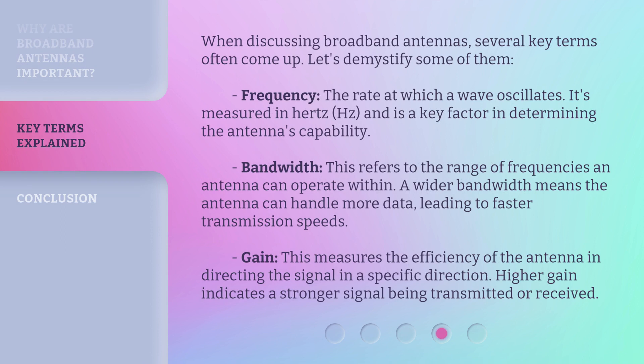When discussing broadband antennas, several key terms often come up. Let's demystify some of them. Frequency: the rate at which a wave oscillates, measured in hertz (Hz), and is a key factor in determining the antenna's capability. Bandwidth: the range of frequencies an antenna can operate within — a wider bandwidth means the antenna can handle more data, leading to faster transmission speeds. Gain: this measures the efficiency of the antenna in directing the signal in a specific direction; higher gain indicates a stronger signal being transmitted or received.